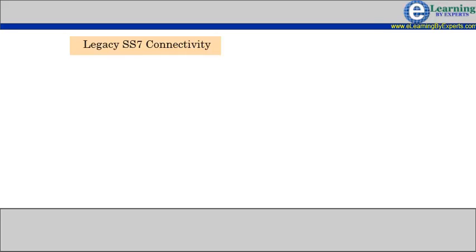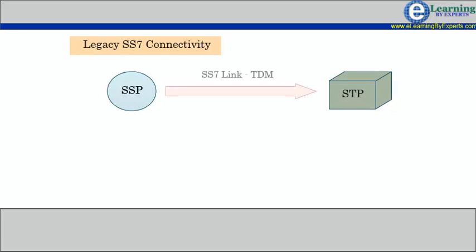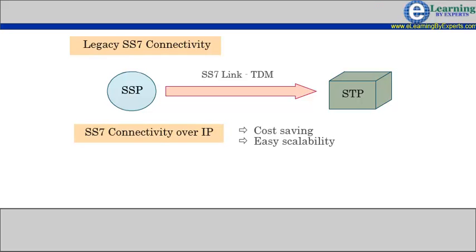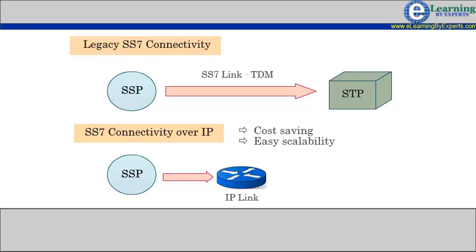In legacy SS7 networks, the links between various SS7 nodes like SSP and STP are expensive TDM links. The intent for movement towards IP links is cost-saving and easy scalability, as TDM-based infrastructure is expensive and difficult to deploy. To introduce IP connectivity, the SS7 nodes also need to be upgraded to support IP-based communication, hence the introduction of IP-based STP, SCP, etc.